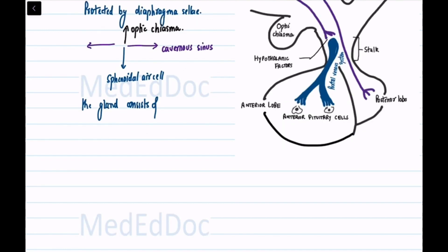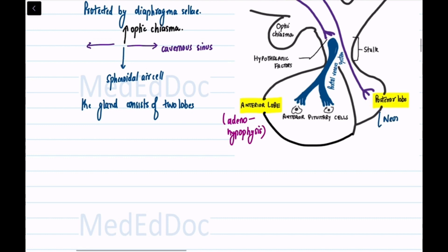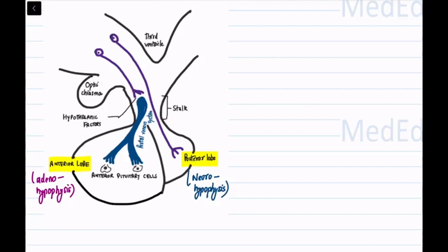The gland consists of two lobes: the anterior lobe, also called adenohypophysis, and the posterior lobe, also called neurohypophysis. The connection between the pituitary gland and the hypothalamus is established through the infundibular stalk, which carries blood vessels from the hypothalamus to the anterior lobe and nerve fibers to the posterior lobe.